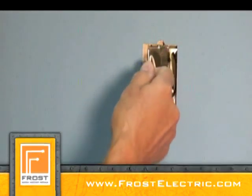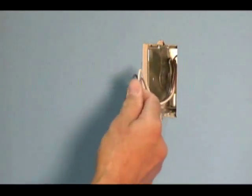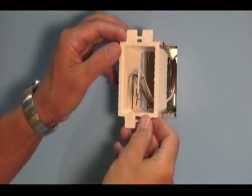Turn the power off, then pull the wires through the box extender and push it into the electrical box.